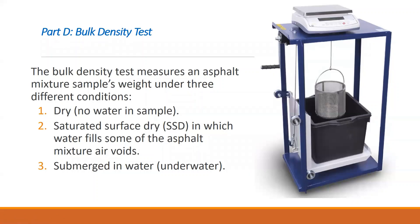For the bulk density test, Part D, we also need to take three mass readings. For this one we are using the cylindrical specimen made using the compactor. We have to take the dry weight of the specimen, the saturated surface dry condition weight, and the weight when it is submerged in water. We are using this scale arrangement to find these three different masses. When finding the mass of the specimen in air, you just keep it on the scale and take that reading.